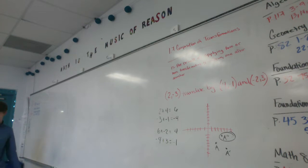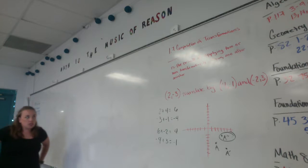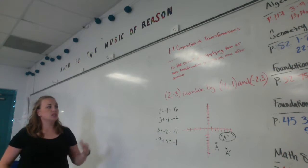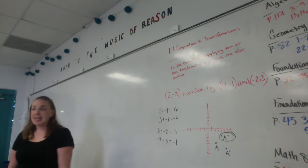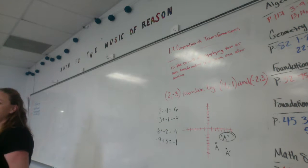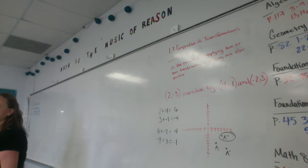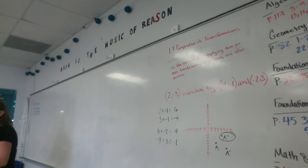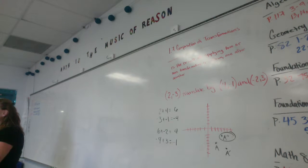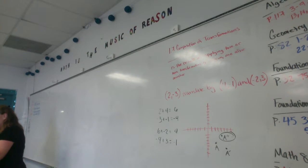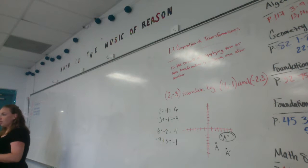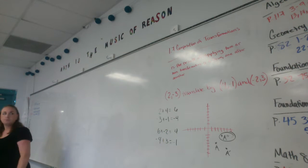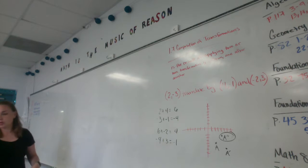That's how you do a composition of transformations. It can be two translations, a translation and a reflection, a rotation and a reflection, or even a double rotation — as long as it's more than one thing happening. It could be four things in a row. Two or more. That's an example using translation.